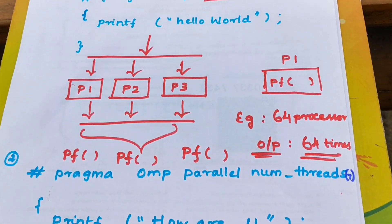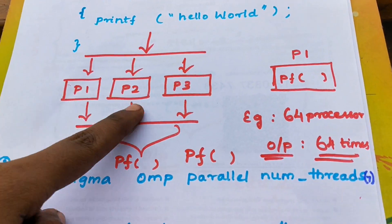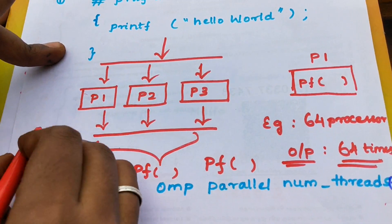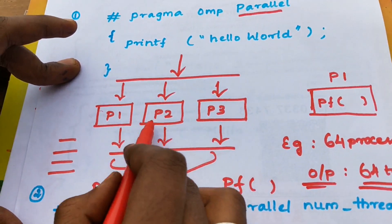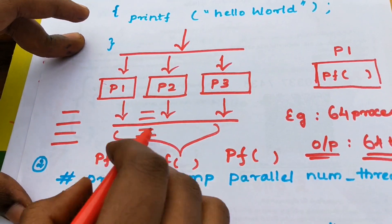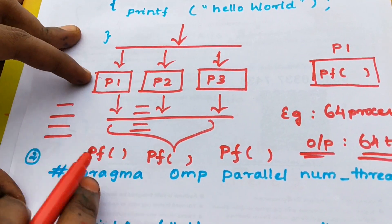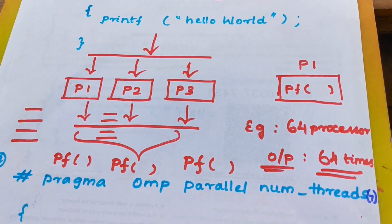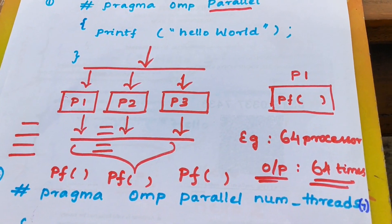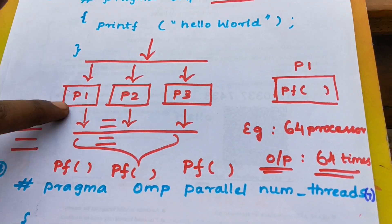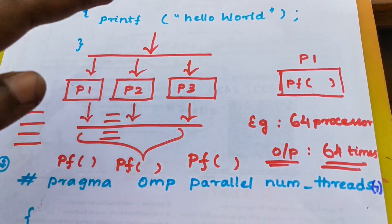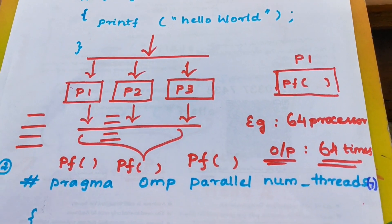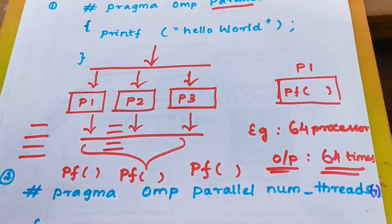Threads and processors are independent. However, processor P2 can depend on P1. For example, some instructions are executed — some lines of code. If P2's value depends on P1's result, then P1 must complete first and pass the argument value to P2. P2 will execute, then pass to P3. This dependent case is serial execution. The parallel process requires that processors be independent.